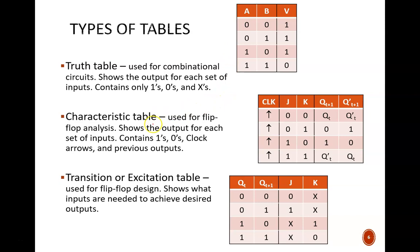Characteristic tables are what we studied last week, and are used for flip-flop analysis. They show how a flip-flop will behave for a given set of input instructions, at a specific clock edge. They contain 1s and 0s, but also variables like Q sub T for the no change and toggle modes.